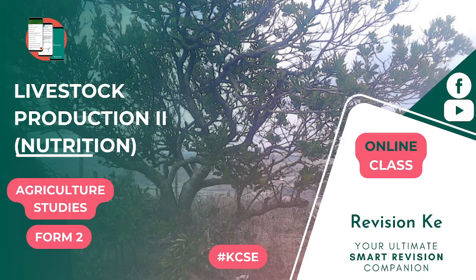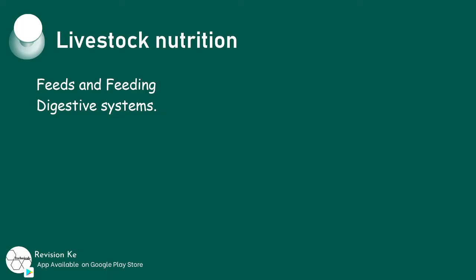Let's have some background of livestock nutrition. We actually feed animals for the purpose of production and body maintenance. The edible material given to animals is called food, and it is digested, absorbed and utilized in the body. Nutrients are organic and inorganic substances contained in the food materials — these are the components of feed or food materials.